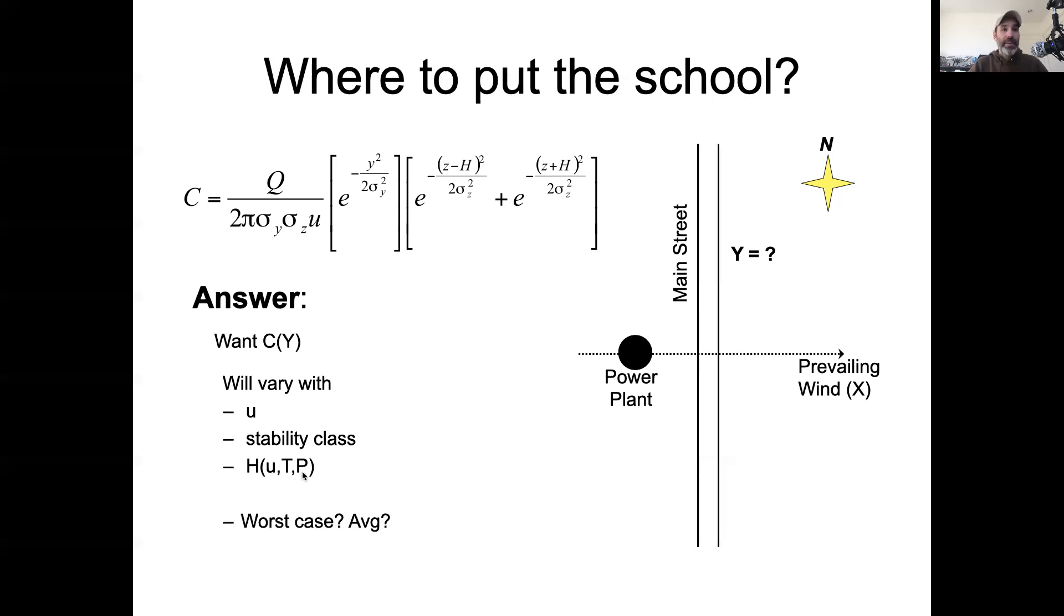And so the question then becomes, what do we actually care about here? Do we really care about the average where we put in the average value for each of these things? Or do we care about the worst case and what would lead to the worst case? Or how do we think about the uncertainty here?